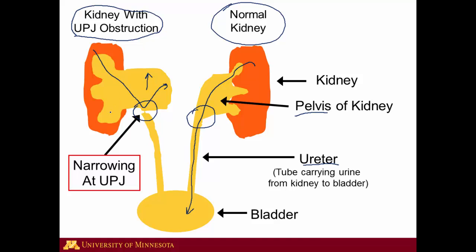Now the cause of this narrowing at the UPJ can be many things. It can be congenital — essentially present for your entire life — or it could be due to scarring from kidney stones or other trauma to the area. Finally, you can occasionally have narrowing at this area due to a cancer within the ureter. This is fairly rare and tends to happen as people age or in people who have a long smoking history.